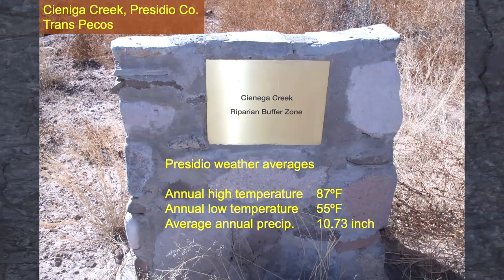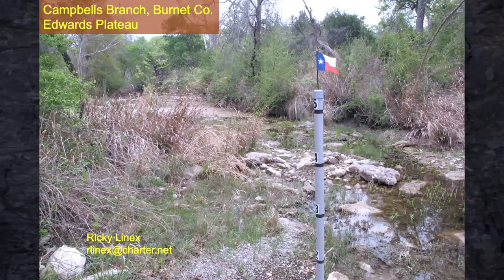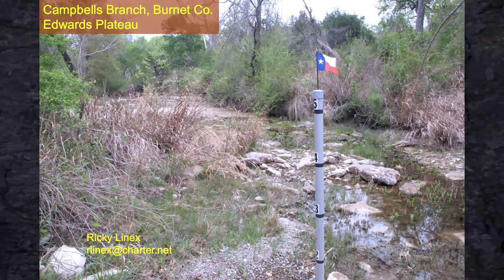Here's Hords Creek in Coleman County. Diverse plant communities of appropriate riparian vegetation with good management will provide healthy riparian areas. Just like on Blanco Creek, they did some restoration work — the damage was so severe that they had to, and that's often used to jump-start recovery. And here's a little creek in Burnet County. The Texas flag was there when we stopped to take this picture, and here we are today, 187 years after the third day of the Battle of the Alamo — they were fighting for Texas freedoms. We need to be Texans that take care of our creeks, protect them, and keep them healthy. That's what I want to leave you with.